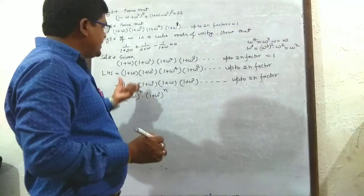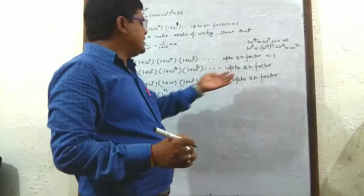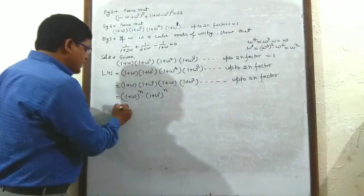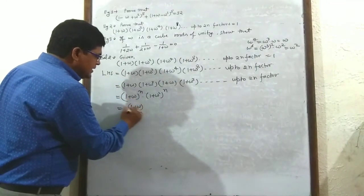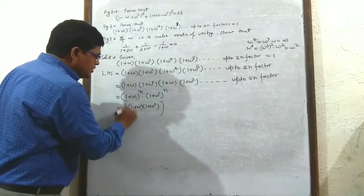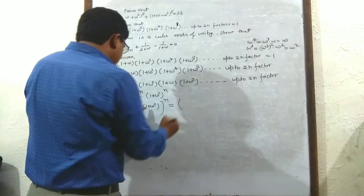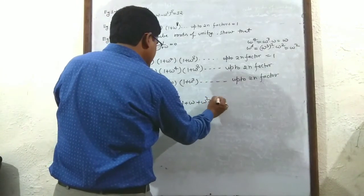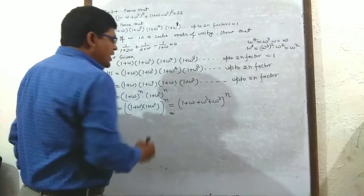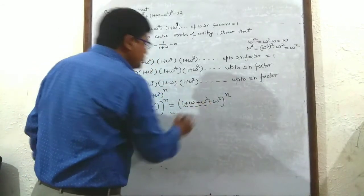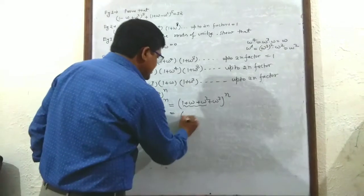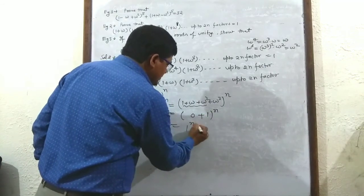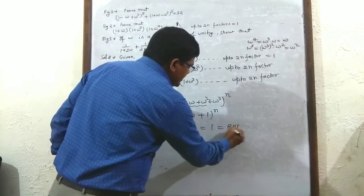Since 1 + ω + ω² = 0 and ω³ = 1, the expression becomes (0 + 1)ⁿ = 1ⁿ = 1 = right hand side. Hence proved.